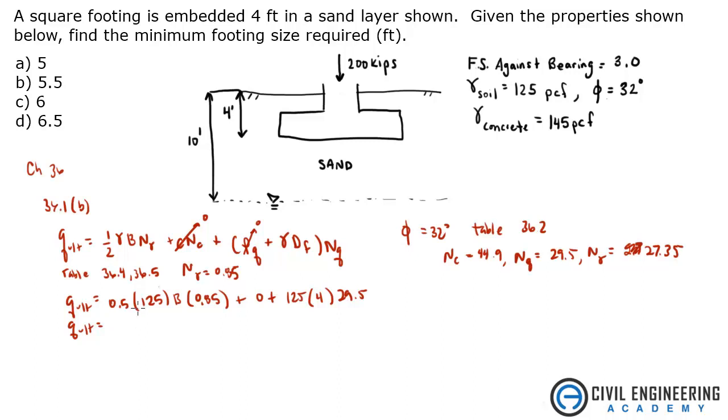So q ultimate equals, I got 1452.97 b plus 14750. All right, so we have one equation, we have this q ultimate to find the ultimate bearing capacity of the soil.